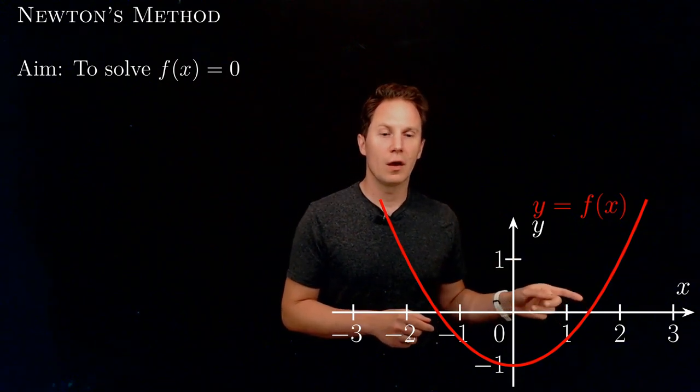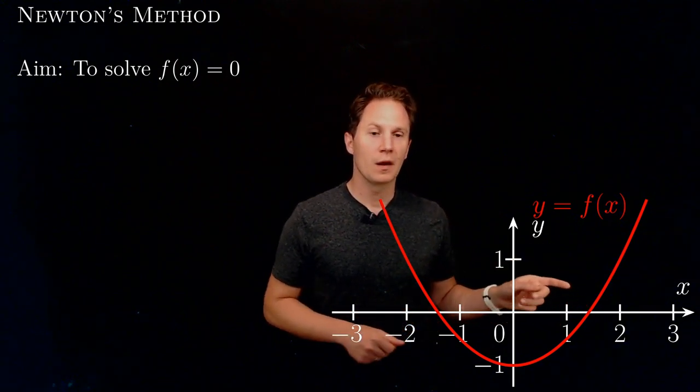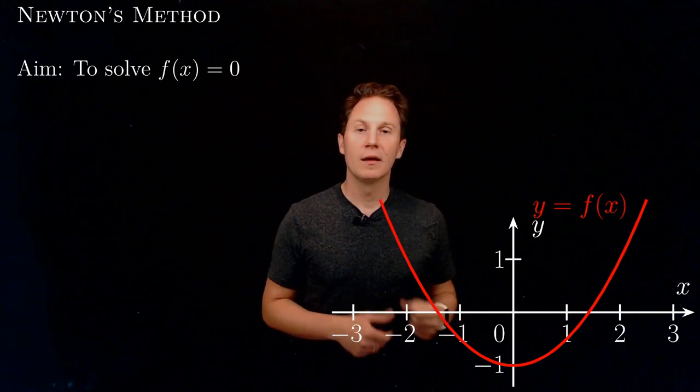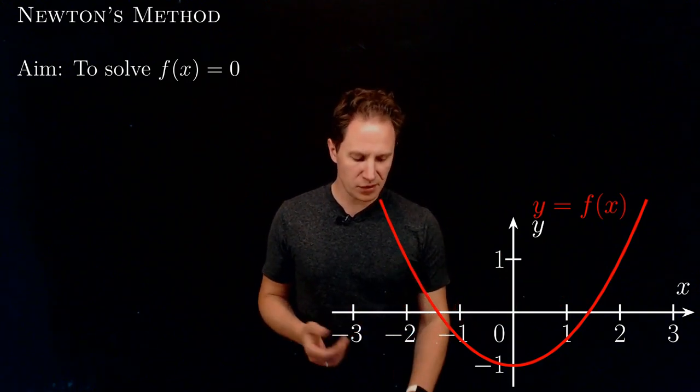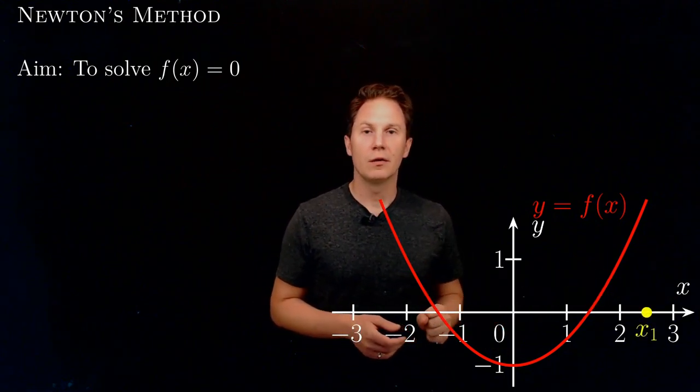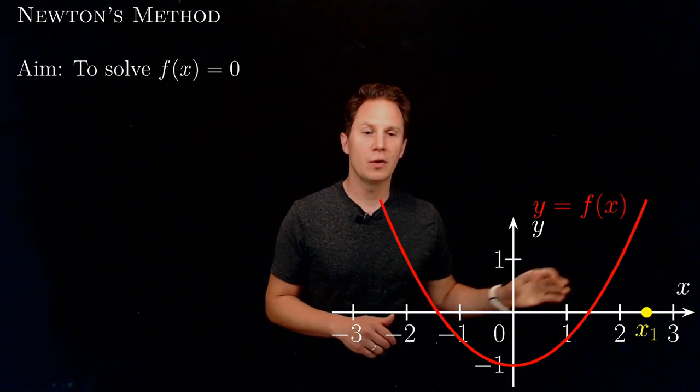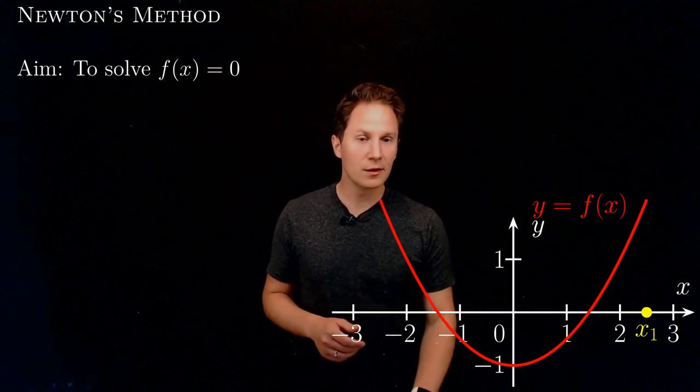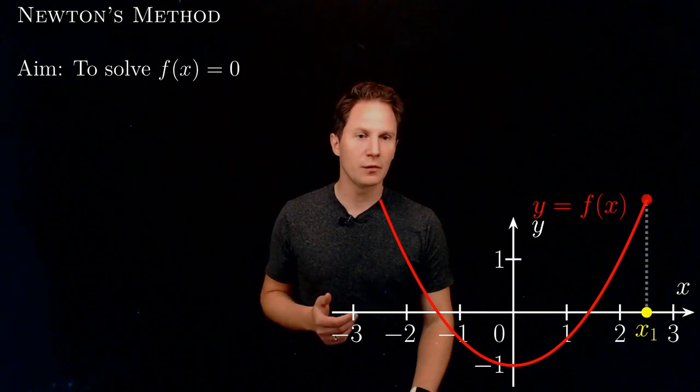Let's just focus on this solution now, this root. We are aiming to find that—the method consists of first just guessing the solution. That would be our initial guess approximation to the solution, x₁, and then looking at the corresponding point on the graph of the function.